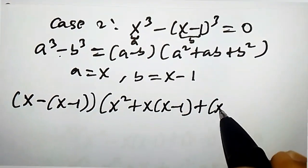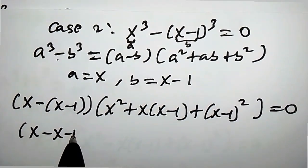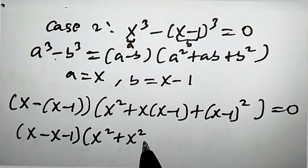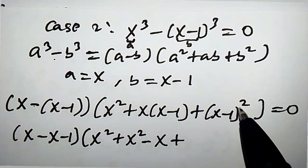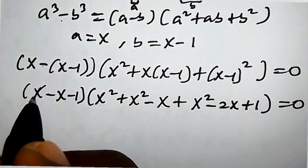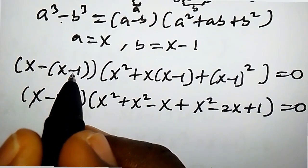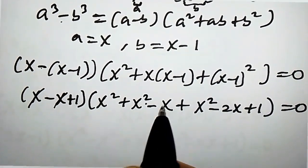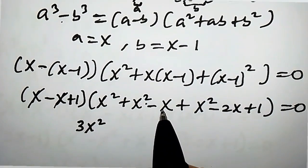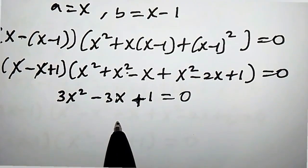Expanding, x minus x minus 1 simplifies to 1. Then expanding x squared plus x times x minus 1 plus x minus 1 squared, we get x squared plus x squared minus x plus x squared minus 2x plus 1, which gives 3x squared minus 3x plus 1 equals 0. We observe that this quadratic equation is not factorizable.